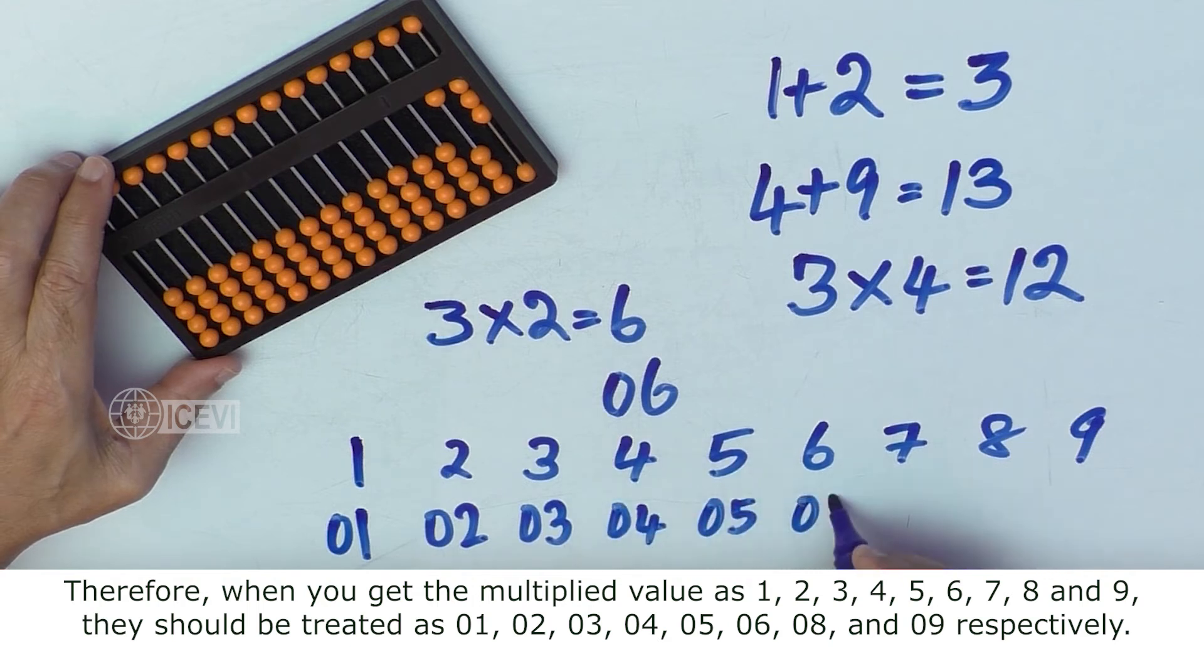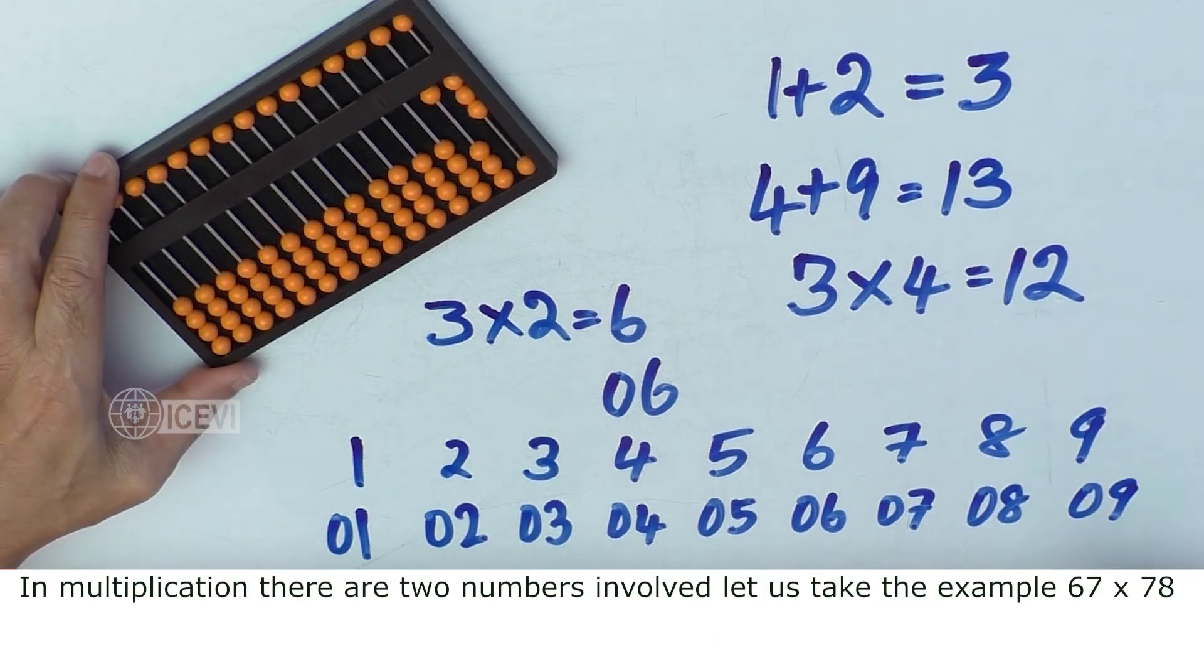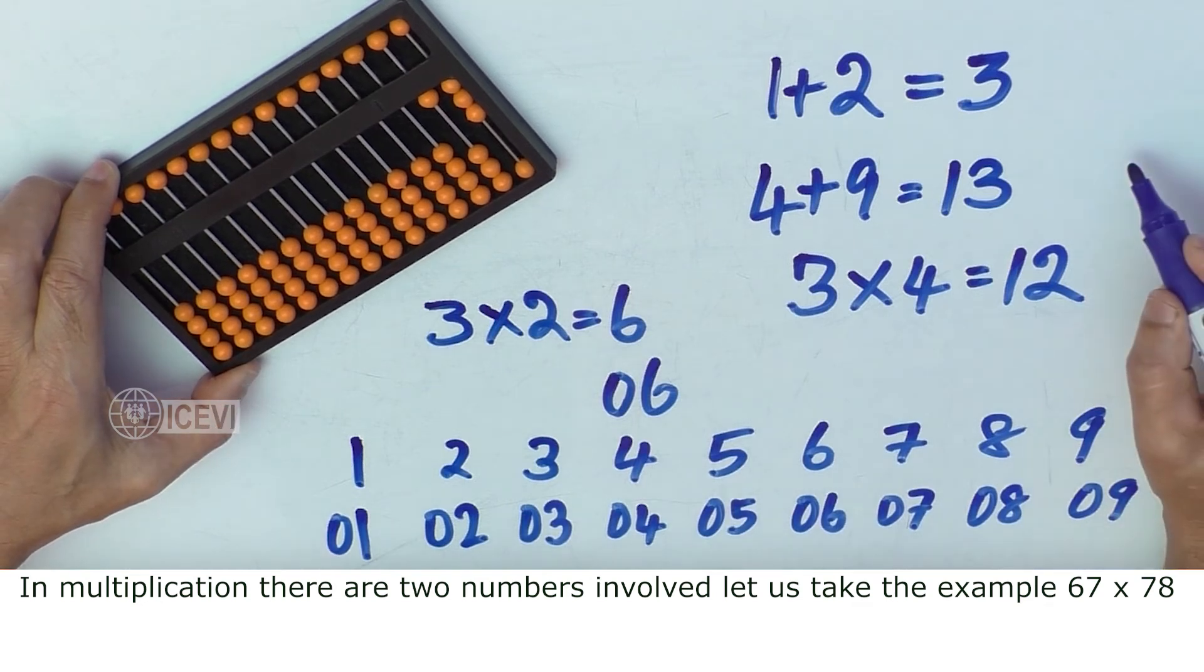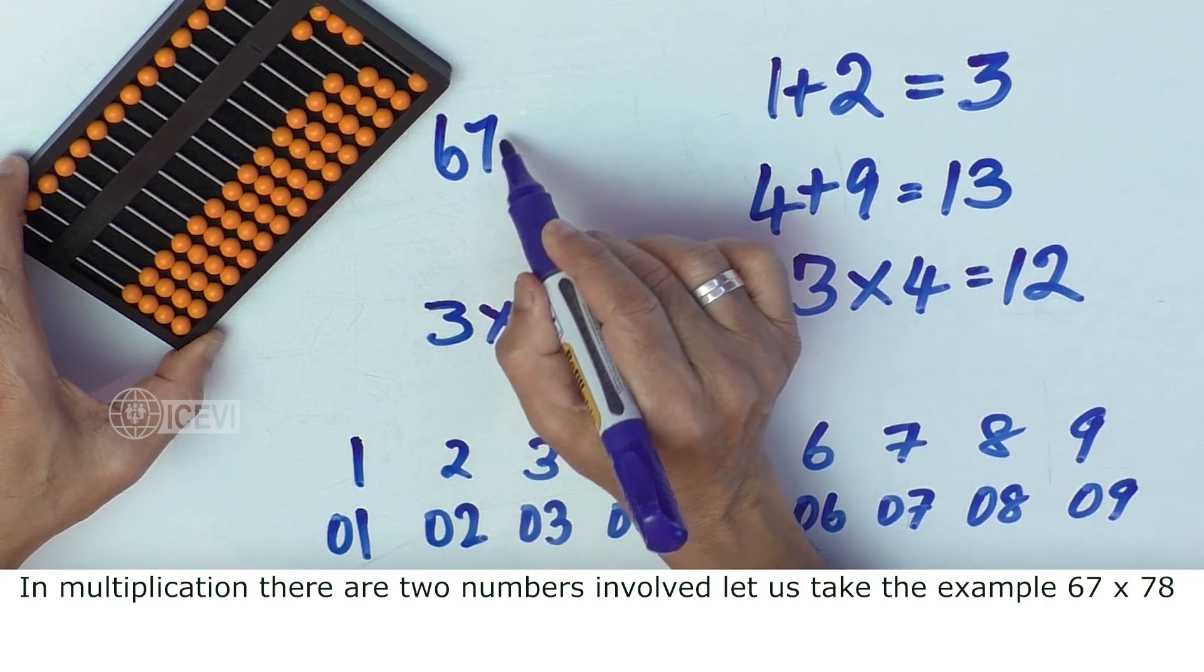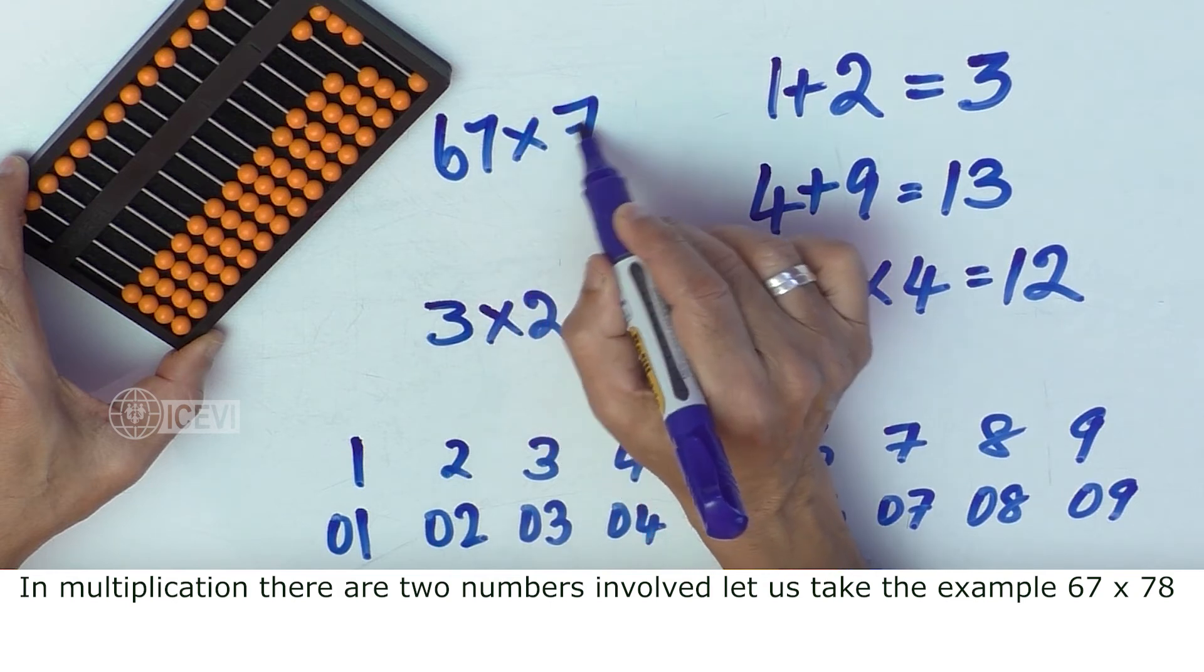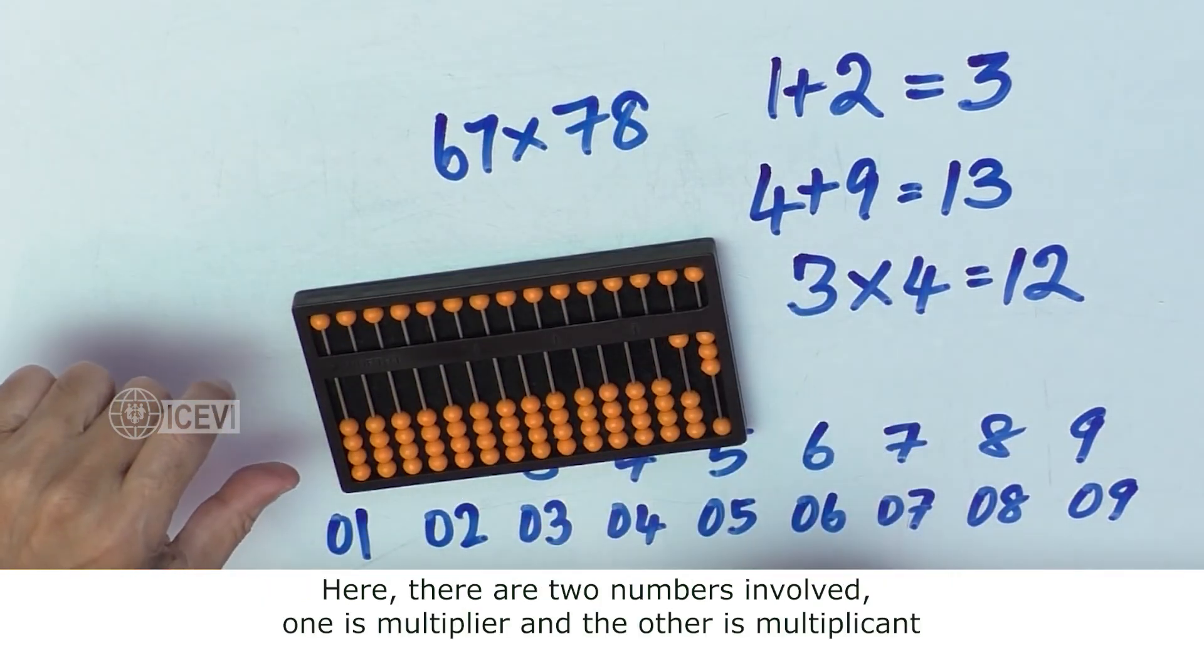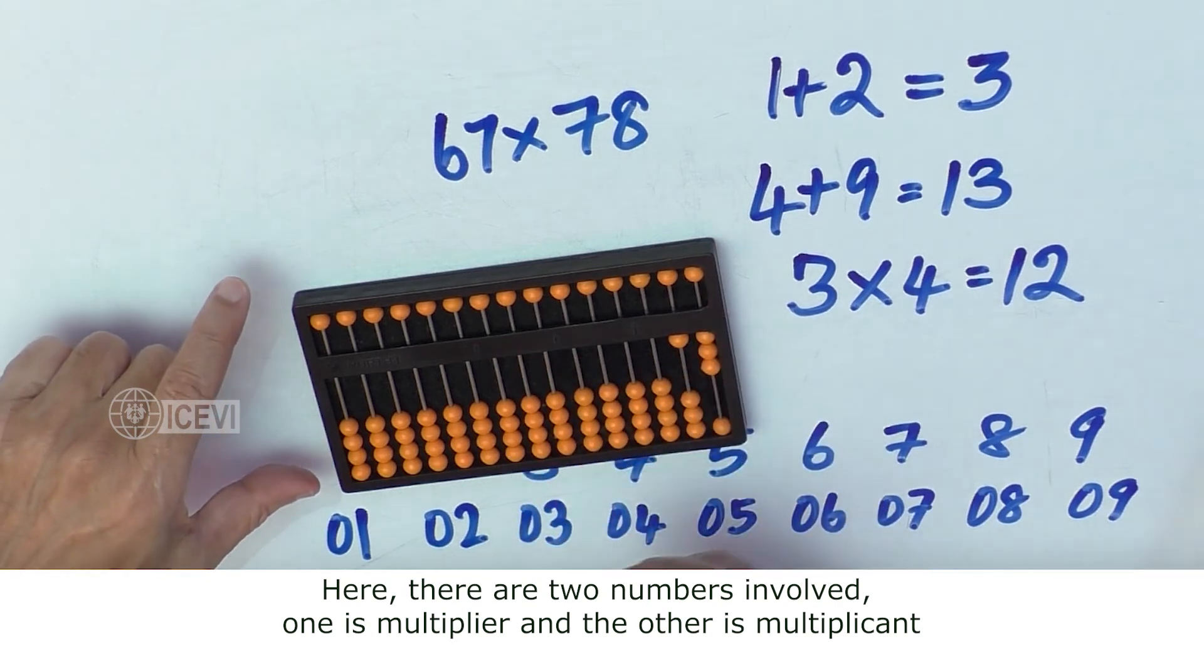In the multiplication, there are 2 numbers involved. Let us take the example 67 multiplied by 78. Here, there are 2 numbers involved. One is Multiplier and the other is Multiplicand.